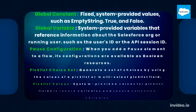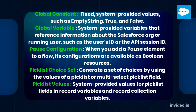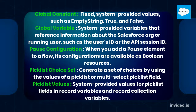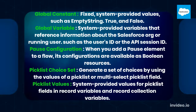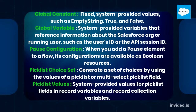Additional resource types: Global Constant — fixed system-provided values such as empty string, true, and false; Global Variable — system-provided variables that reference information about the Salesforce org or running user, such as the user's ID or the API session ID; Pause Configuration — when you add a pause element, its configurations are available as boolean resources; Picklist Choice Set — generate a set of choices using the values of a picklist or multi-select picklist field; Picklist Values — system-provided values for picklist fields in record variables and record collection variables.